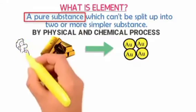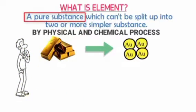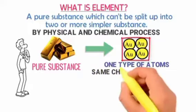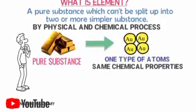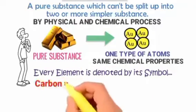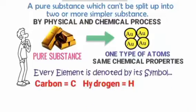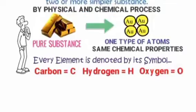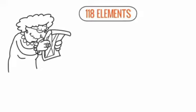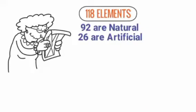Gold is a pure substance. Even if you crush it, you only get one type of atom, which is gold, and it has the same chemical properties. Every element is denoted by its symbol — for example, carbon is C, hydrogen is H, oxygen is O. Scientists have discovered 118 elements: 92 are natural while 26 are man-made or artificial.